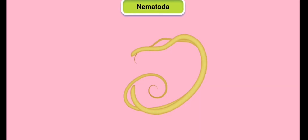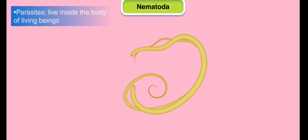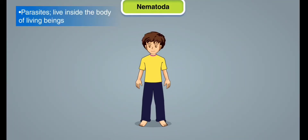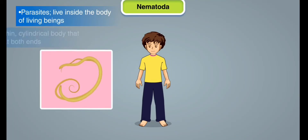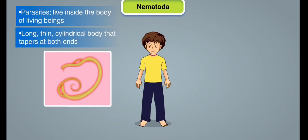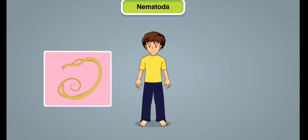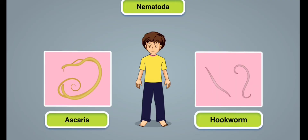Phylum Nematoda: Nematodes are also parasitic worms that live inside the body of living beings. They have a long, thin, cylindrical body that tapers at both ends. Ascaris and hookworms are examples of nematodes.